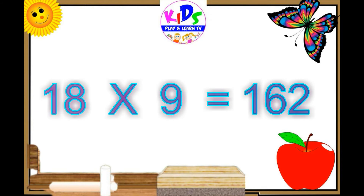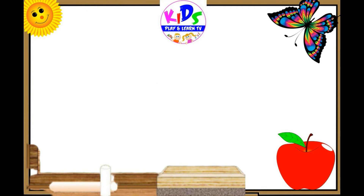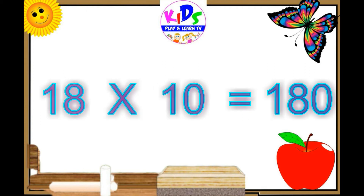Eighteen nines are 162. Eighteen tens are 180.